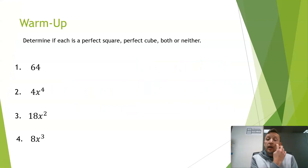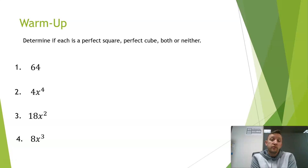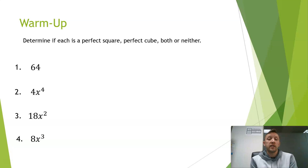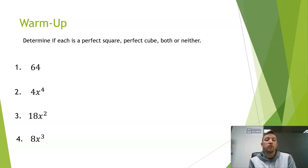To begin, I want you to take a minute and identify each of these as being a perfect square, a perfect cube, both, or neither. A perfect square means there's something you could square to get exactly that value. A perfect cube means something you could cube to get that value, and sometimes they could be both. Pause this video and hit play when you're ready to check.